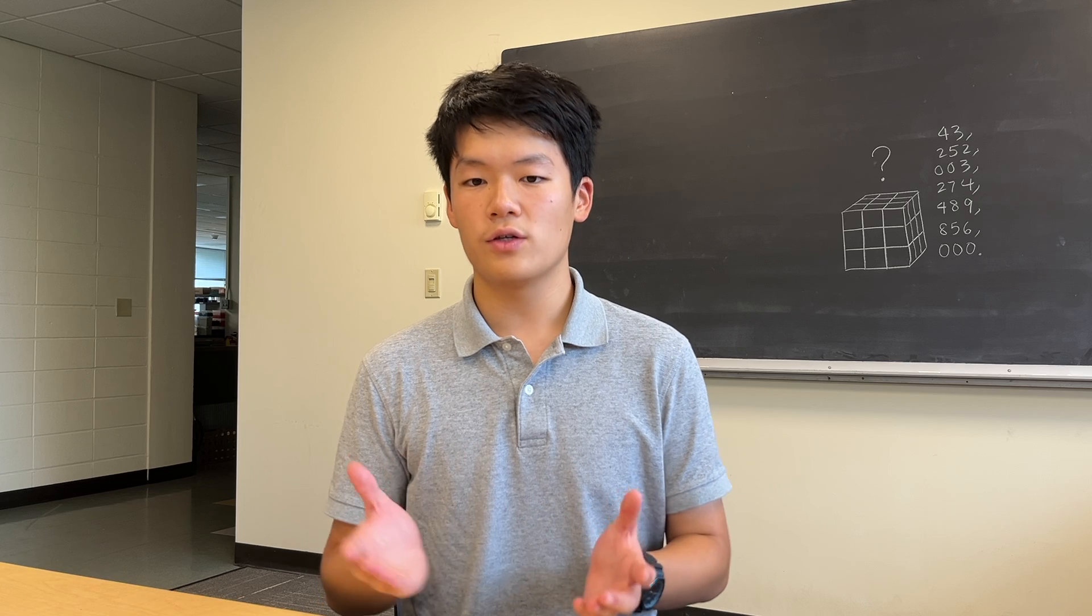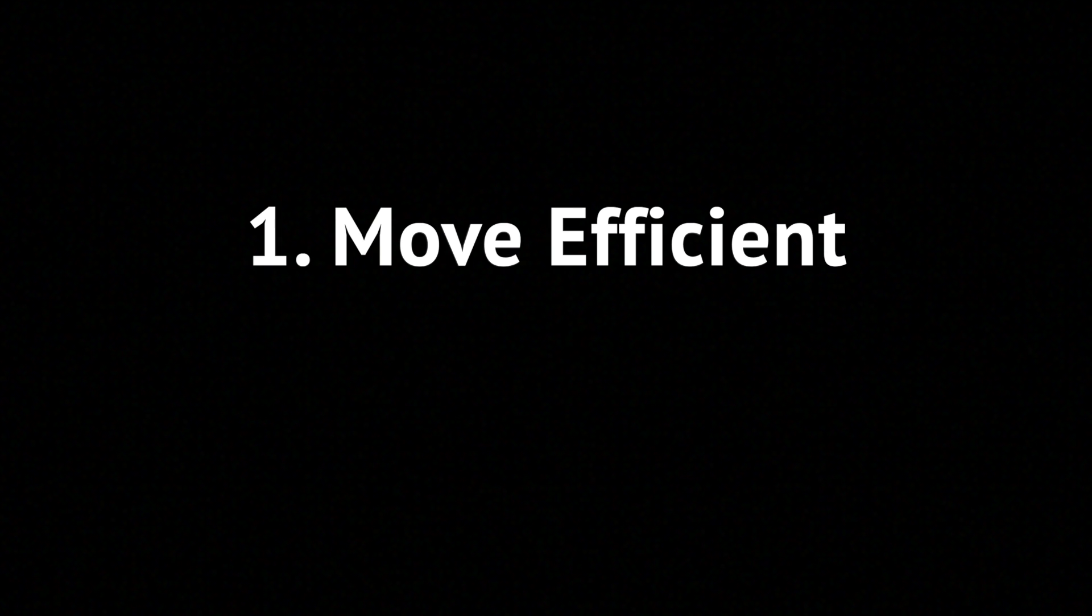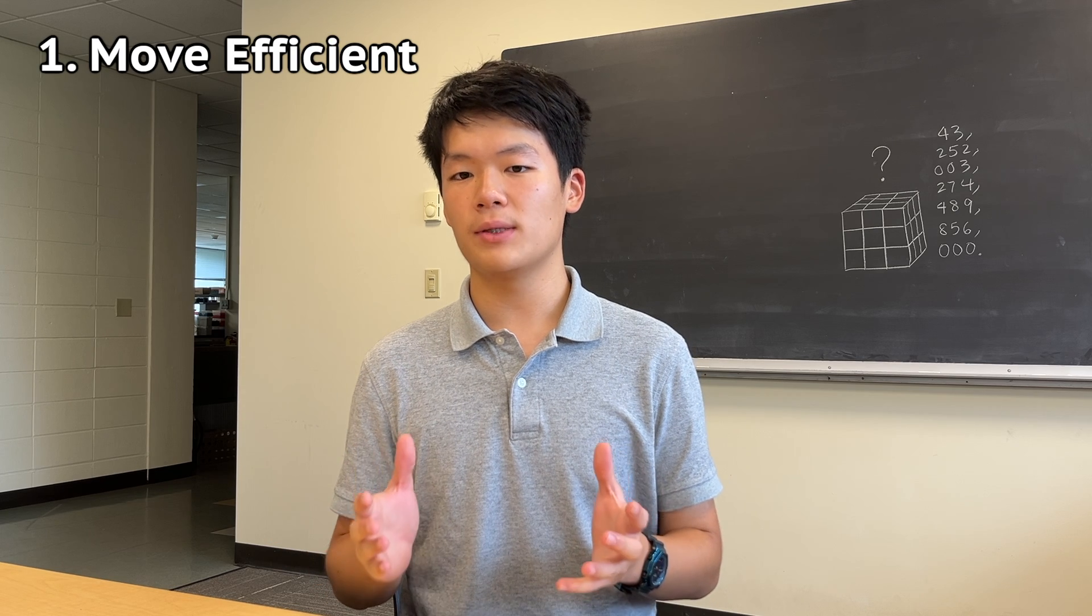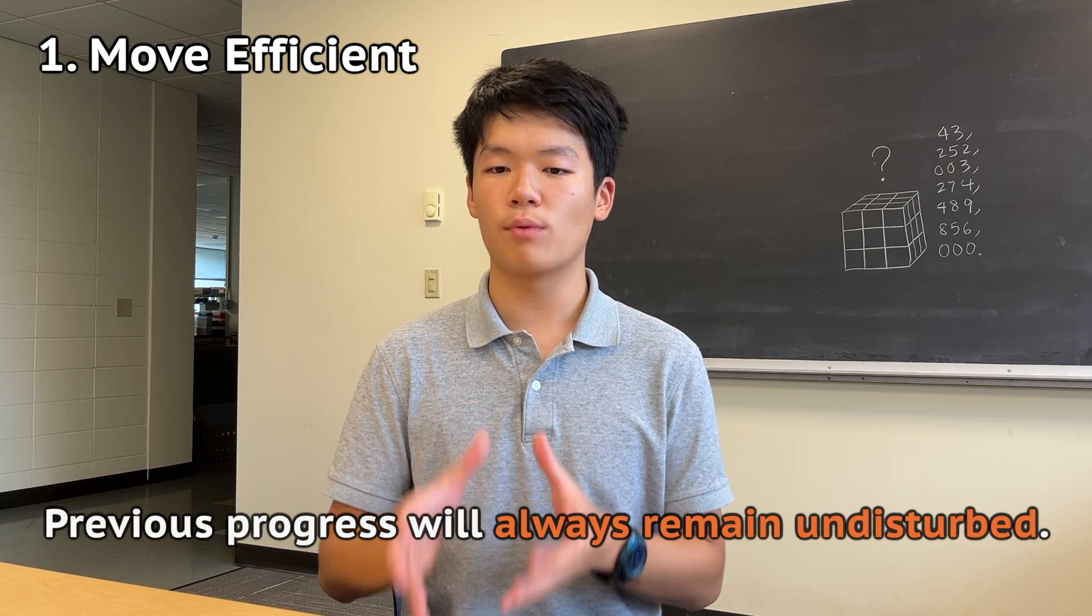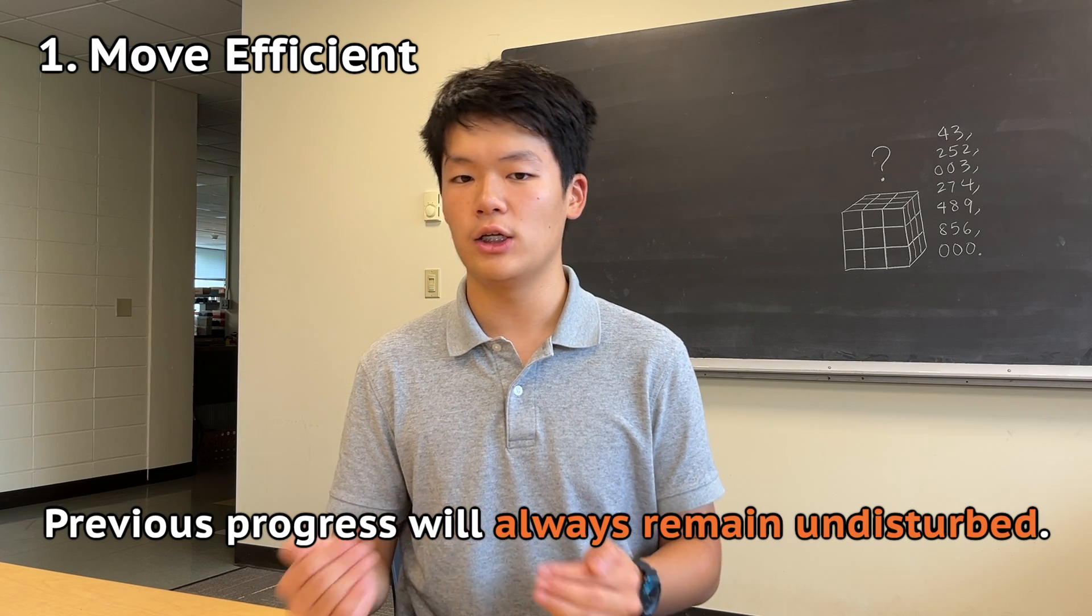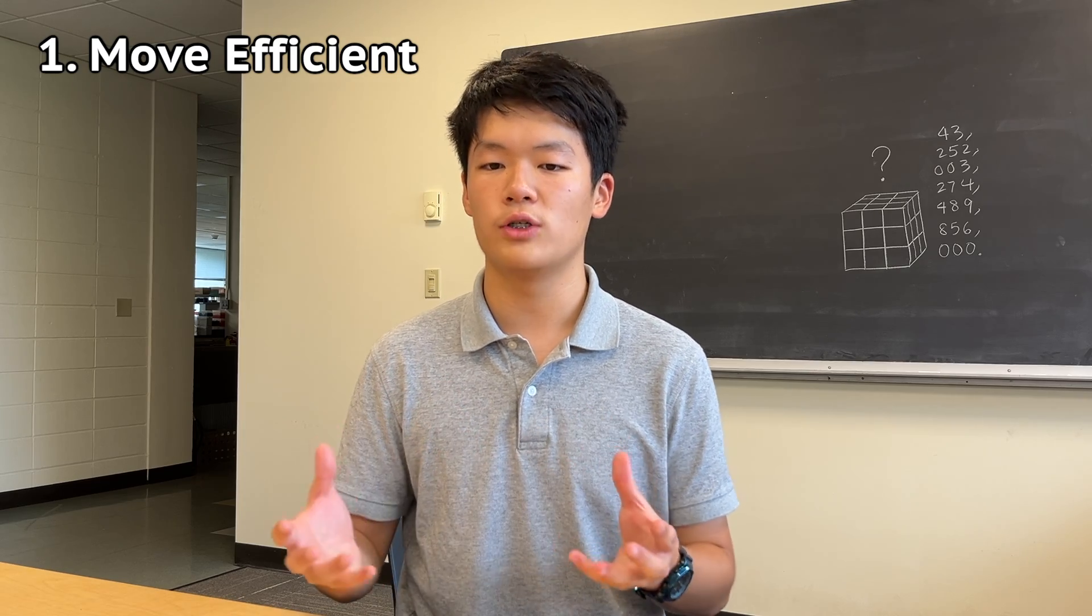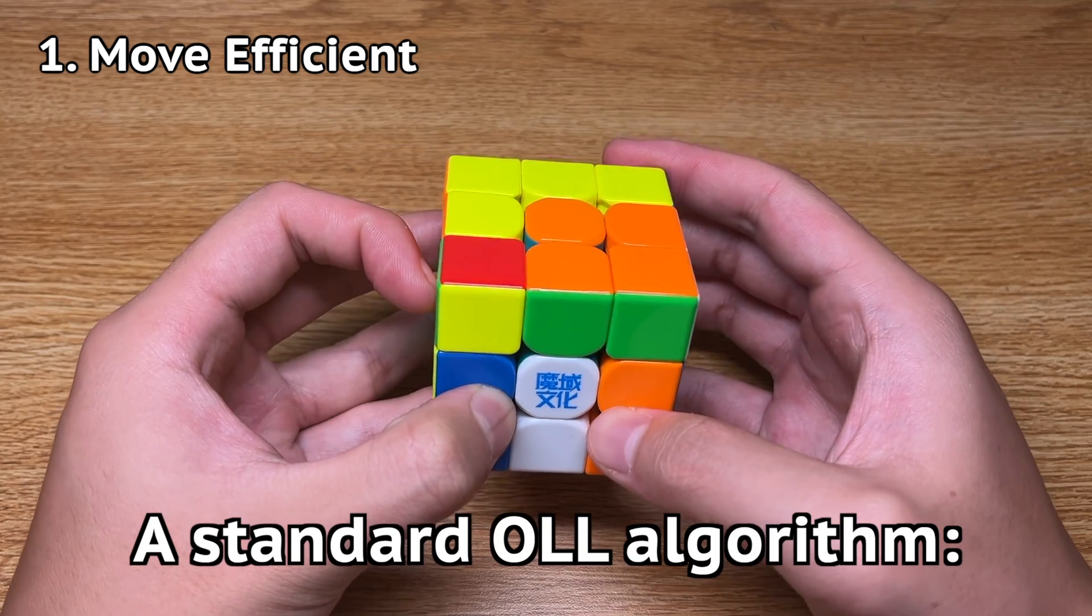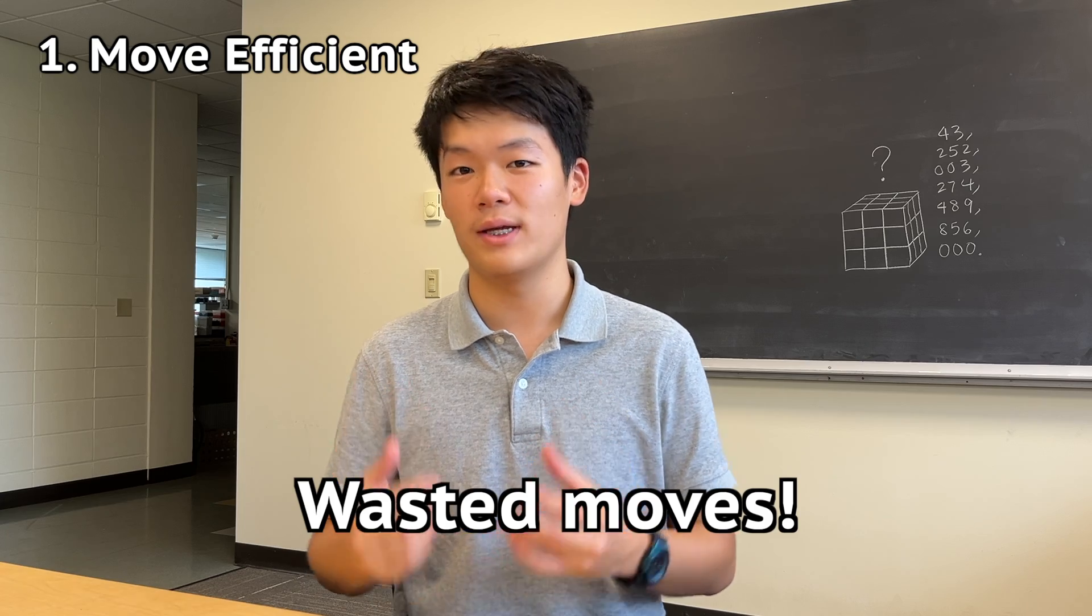Solving methods like Thistlethwaite's algorithm are designed with two things in mind. It has to be move efficient, and it has to be really computer-friendly. Once the cube is out of position in G1, using the set of moves in G1, the previous progress will remain undisturbed, meaning that the cube will never revert back to a state in G0. Unlike most speed-solving methods, whose algorithms usually start by disturbing previous progress, then restoring it in a different way at the end. That's a lot of wasted moves as compared to Thistlethwaite's algorithm.